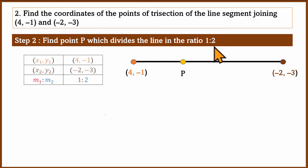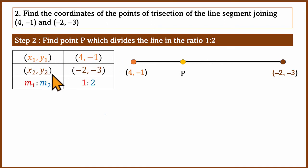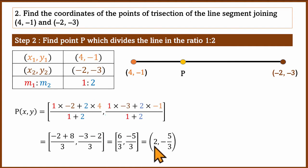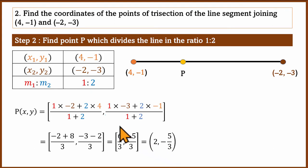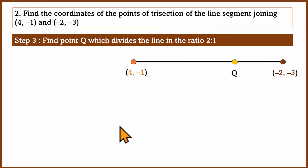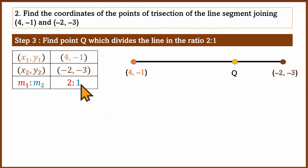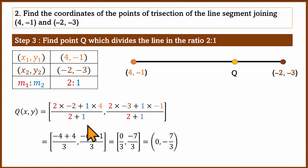Using the section formula with x1, y1 and x2, y2 and ratio 1:2 for point P, we substitute and calculate. The answer for P comes out to (0, -7/3).